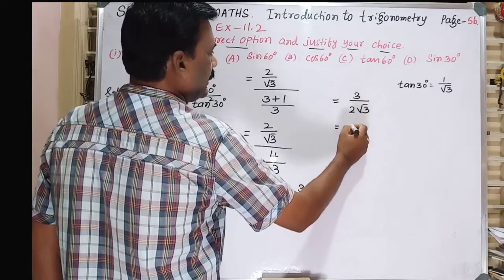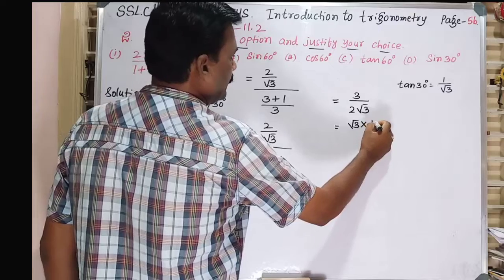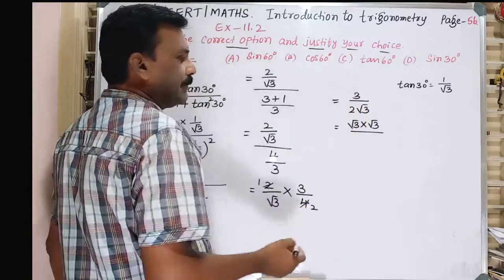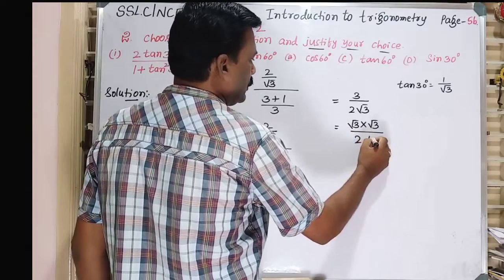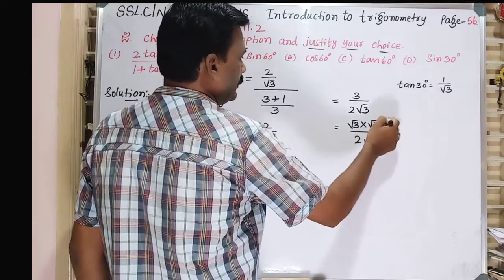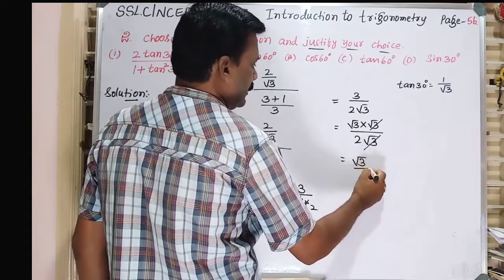So now 3 is equal to √3 times √3. So √3 times √3 is equal to 3. So this is 2√3. So √3 and √3 cancel. So we get √3/2.